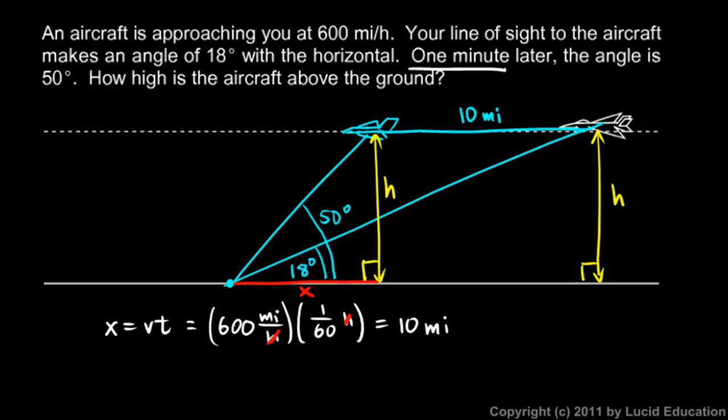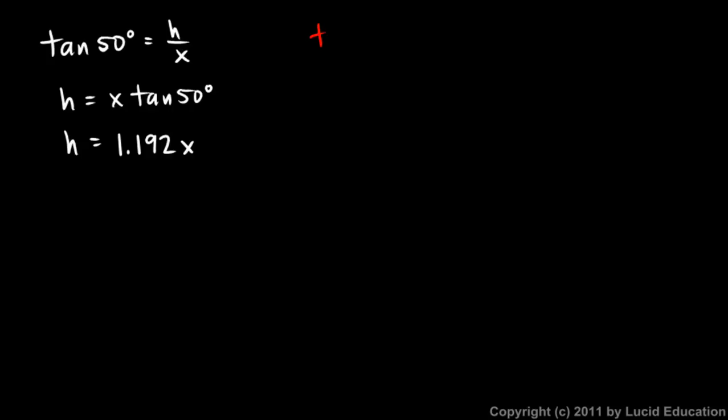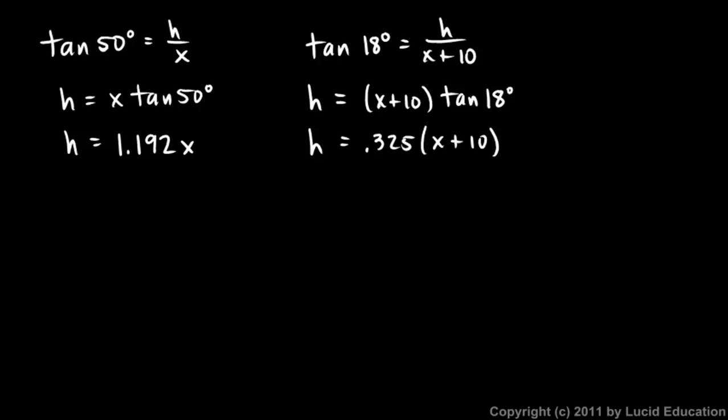So I can say the tangent of 18 is h over x plus 10. Let's come over here and write that. The tangent of 18 degrees is h over x plus 10. Then let's solve this for h also. h is equal to x plus 10 times the tangent of 18 degrees. The tangent of 18 degrees is just a number that we can find on the calculator. We punch that in and we get 0.325. So I'm going to write this: h is equal to 0.325 times x plus 10.